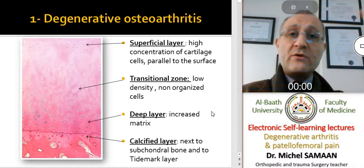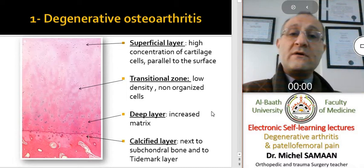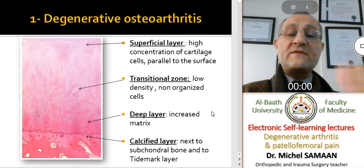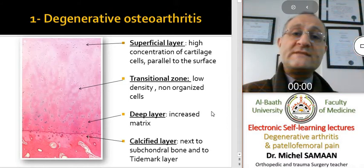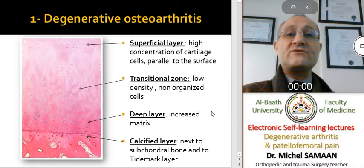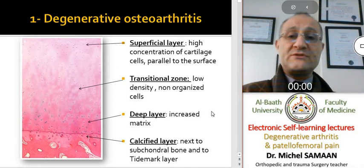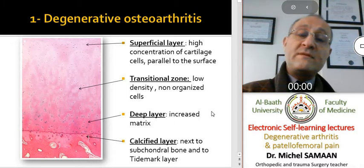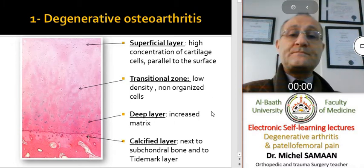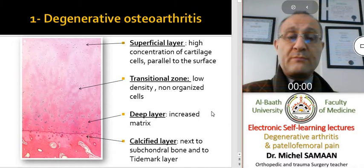When we go deeper into the cartilage thickness, we can see the transitional zone and the deep layer, with a decrease in the concentration of chondrocytes and an increase of the matrix composition. The deepest layer is the calcified layer that lies next to the subchondral bone and the tidemark.